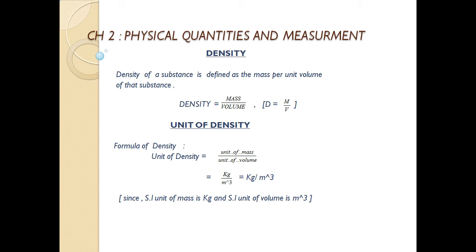Now how we can get the unit of density? For that you just think about the formula of density. If density is equal to mass upon volume, it means unit of density will be unit of mass upon unit of volume. Unit of mass is kg and unit of volume is meter cube, so overall the unit of density is kg per meter cube. Here I am talking about SI unit.